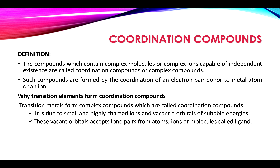Coordination compounds: the compounds which contain complex molecules or complex ions capable of independent existence are called coordination compounds or complex compounds. Such compounds are formed by the coordination of an electron pair donor to a metal atom or ion, so that they have the tendency to form coordination compounds.